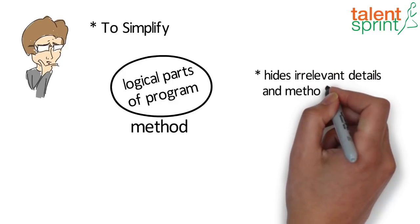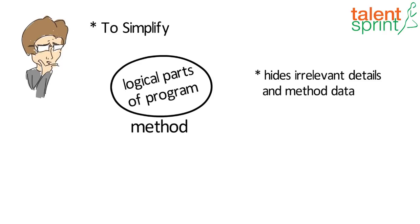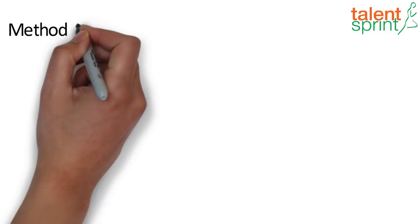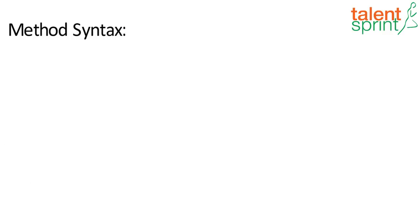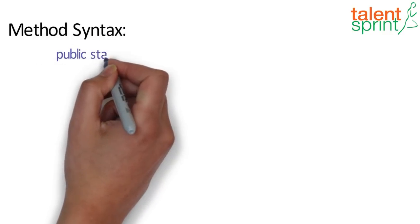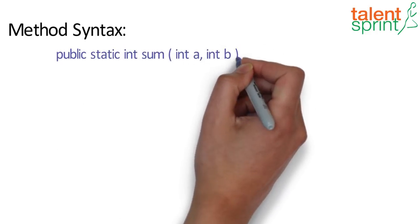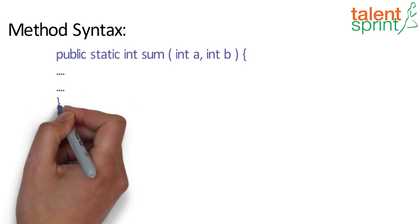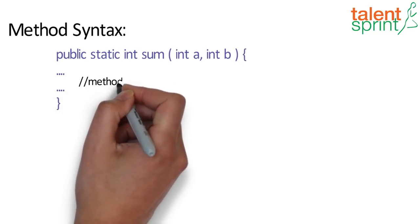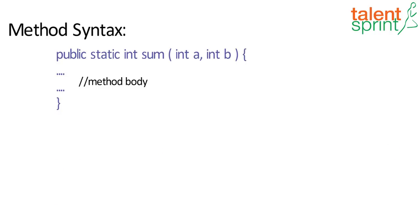So now that we know why we need to use methods, let's take a look at a basic method syntax in Java. Public static int method name followed by the parameters, and then inside the braces you give a set of statements that make the method body.